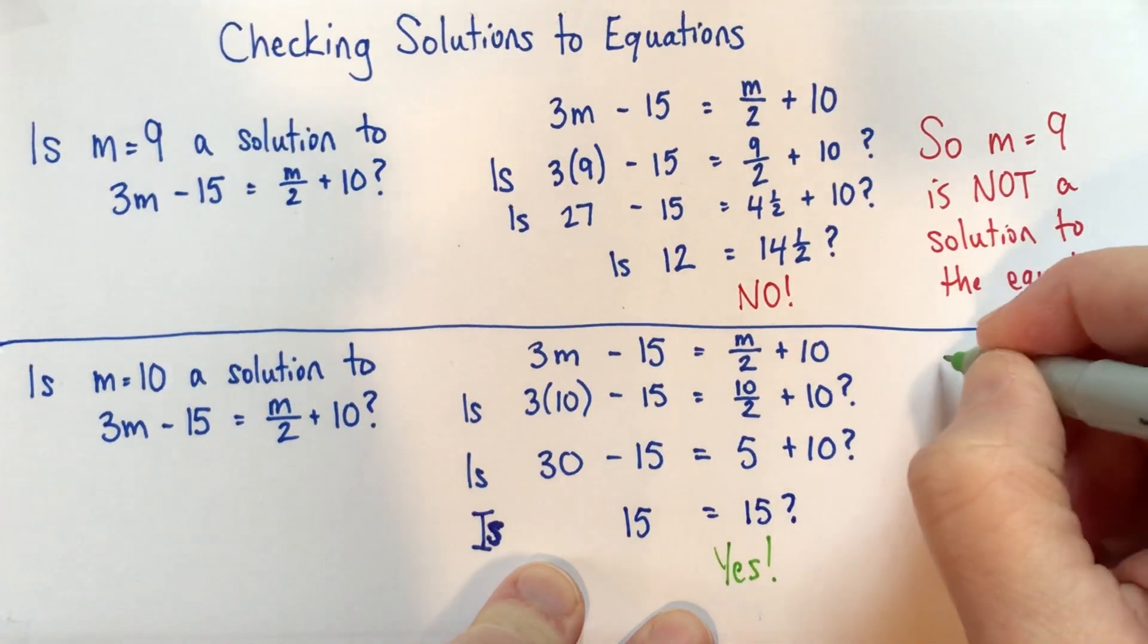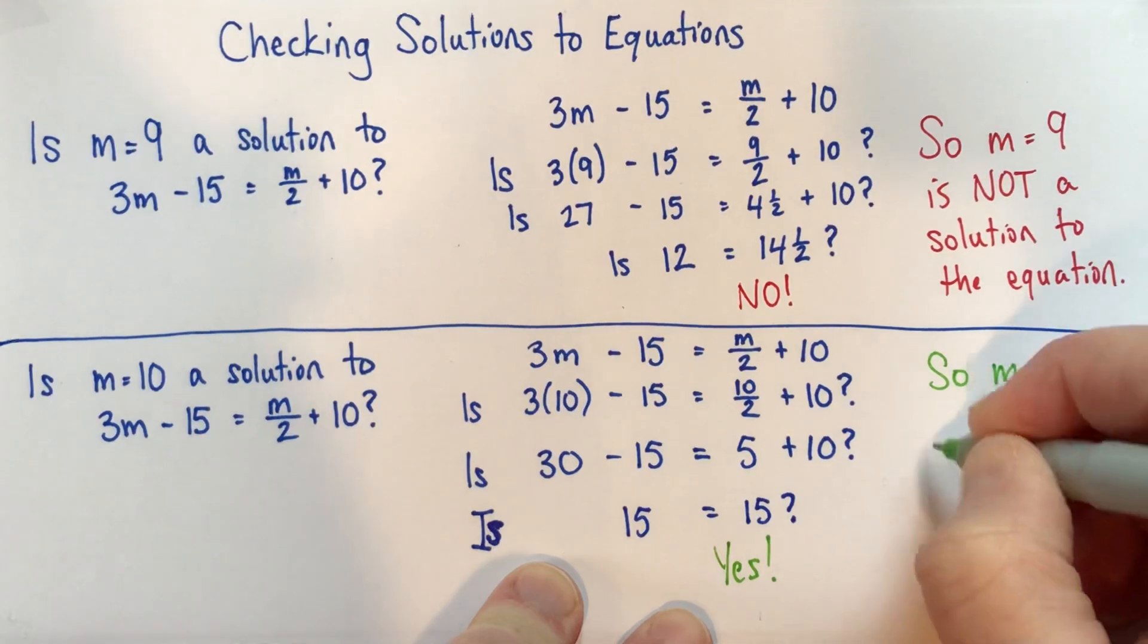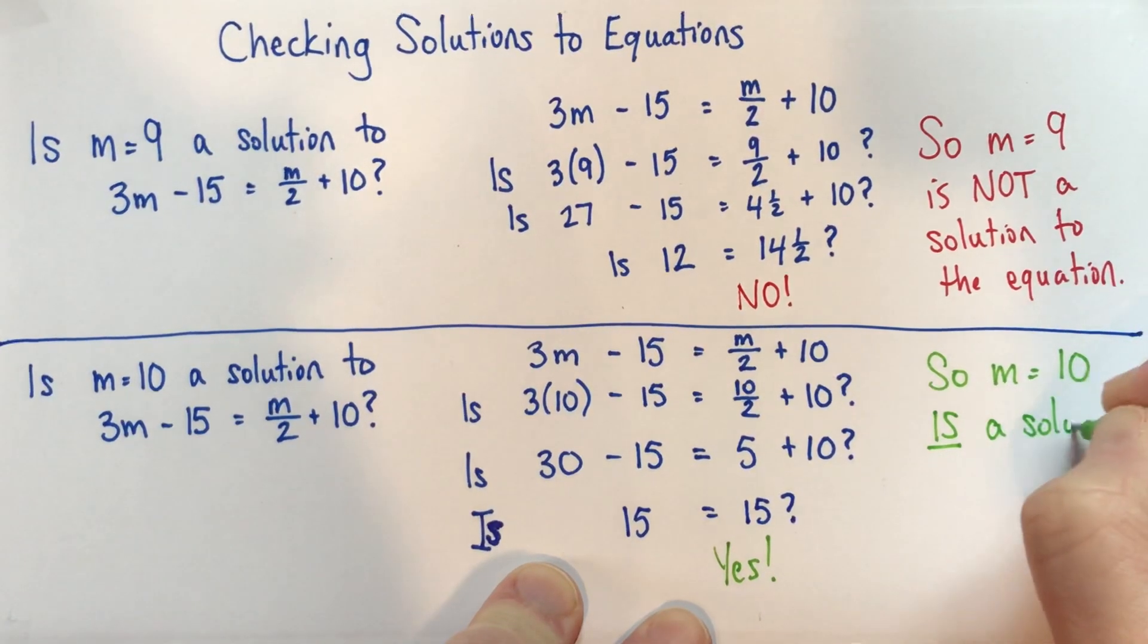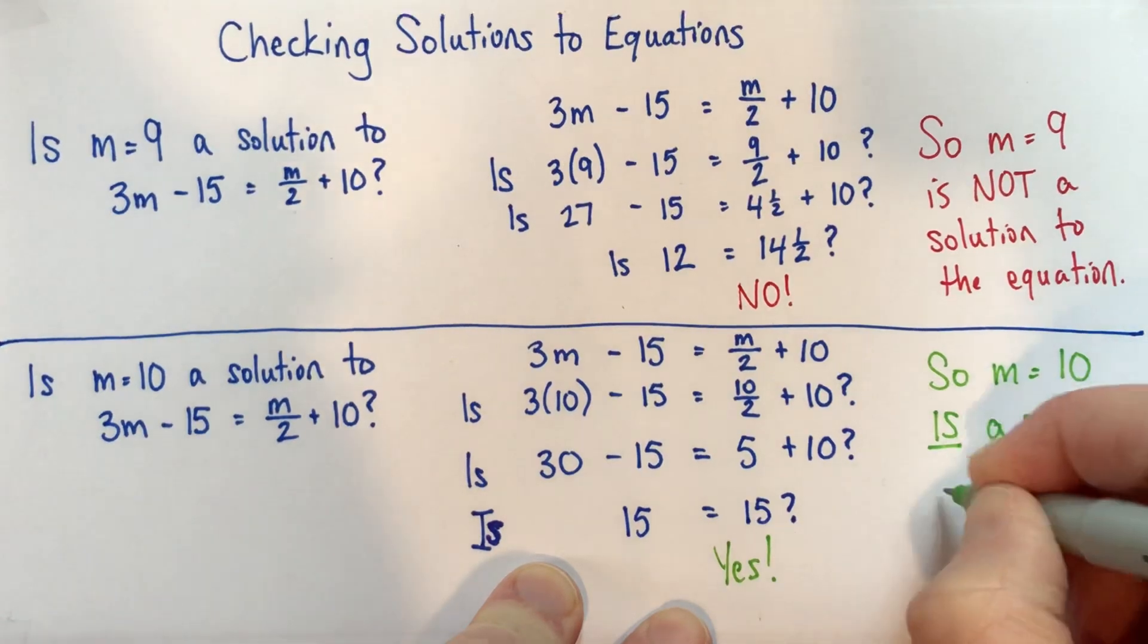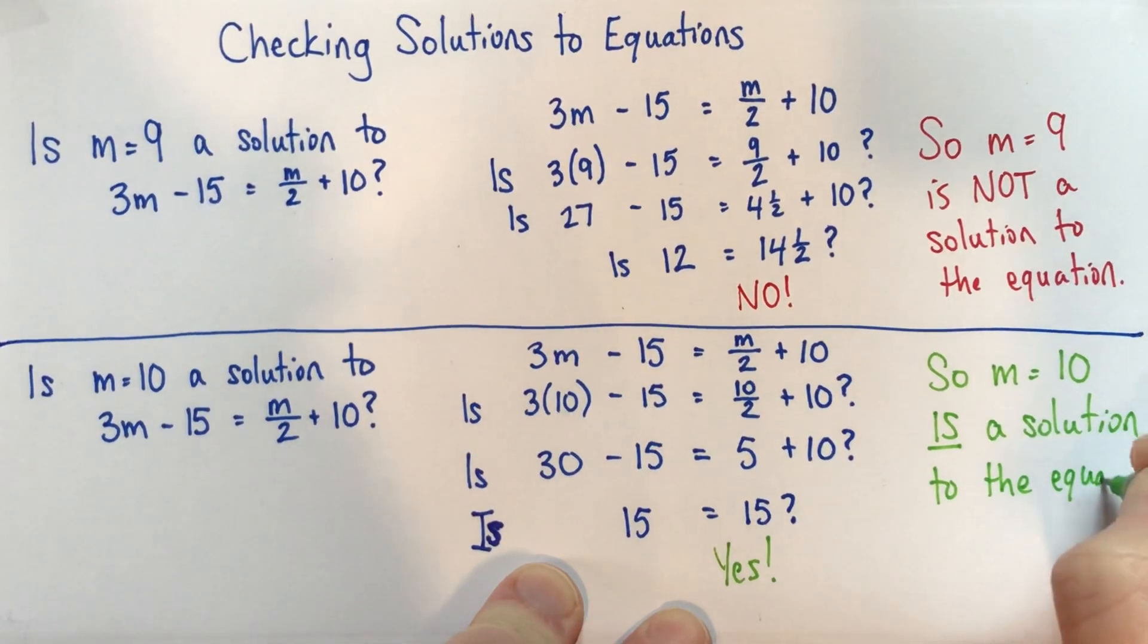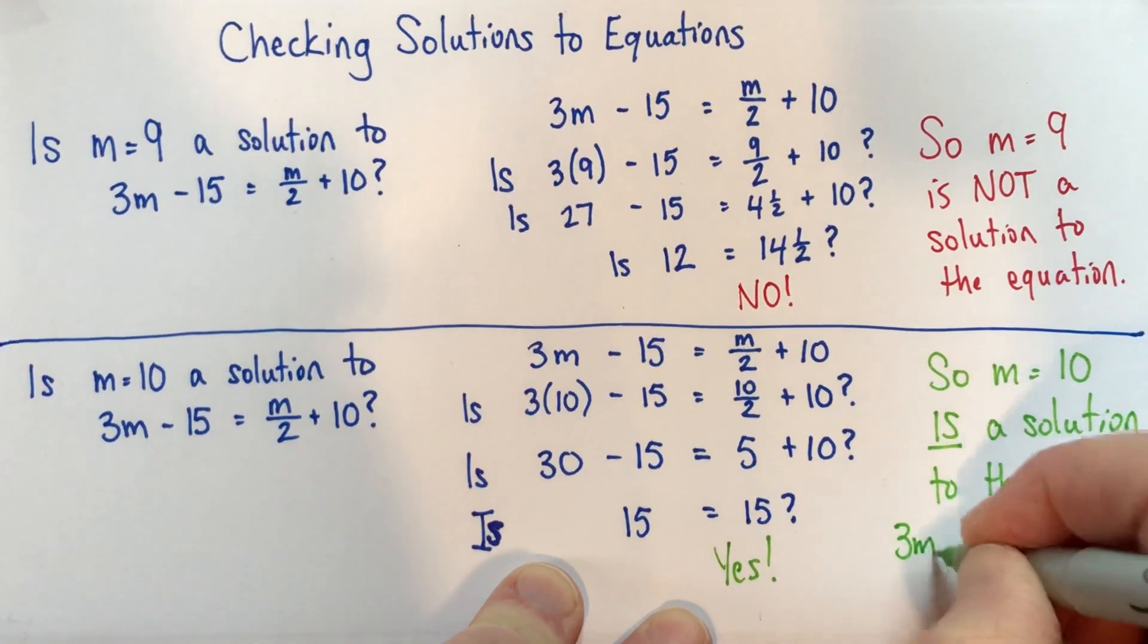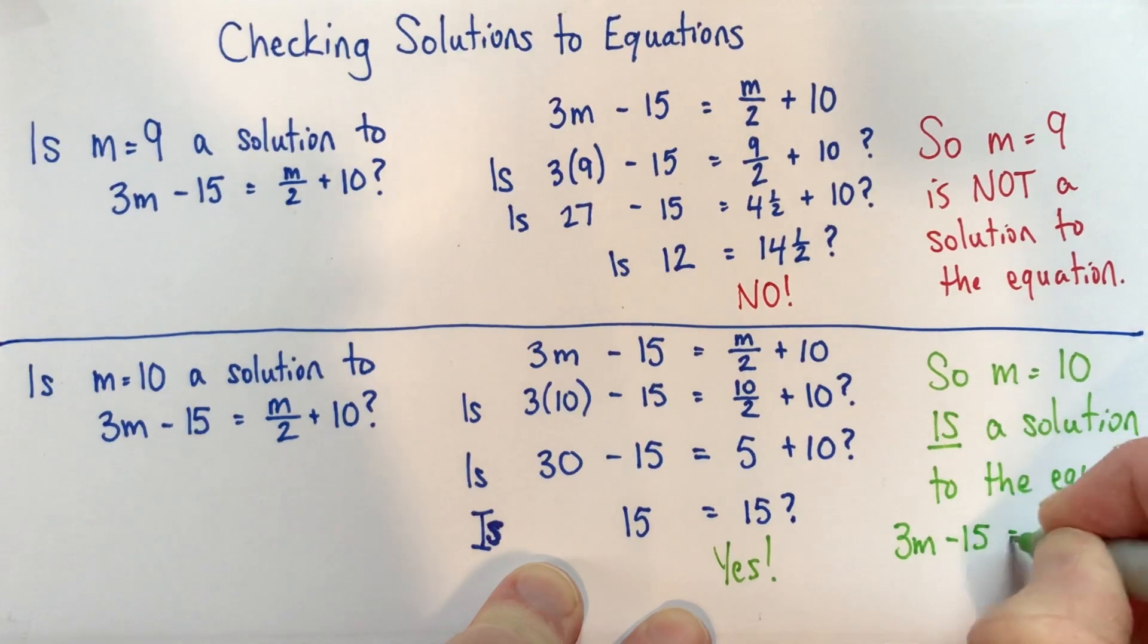Yes, so what that tells us, m equals 10 is a solution to the equation 3m subtract 15 equals m divided by 2 plus 10.